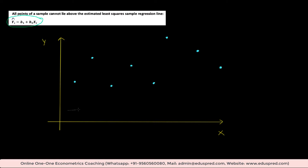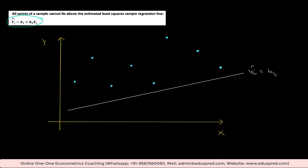The question is asking: can we have a situation where all sample points lie above the regression line? So this is the sample regression line, y-hat equal to b1 plus b2*xi. In the scenario I've drawn, all the blue points are lying above the estimated least squares sample regression line — this white line. Do you think this can happen? The answer is no. This cannot happen, meaning this statement is true.